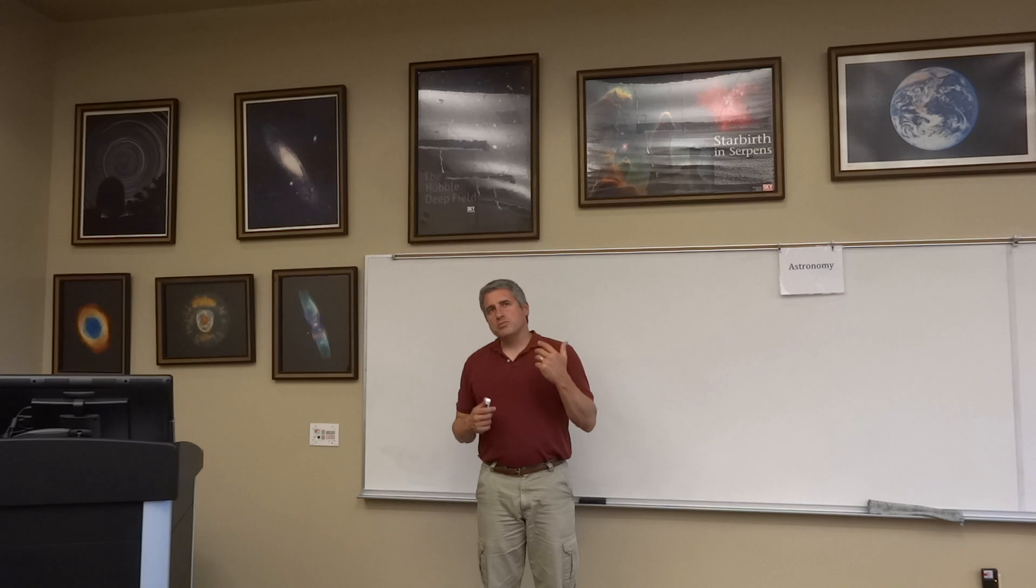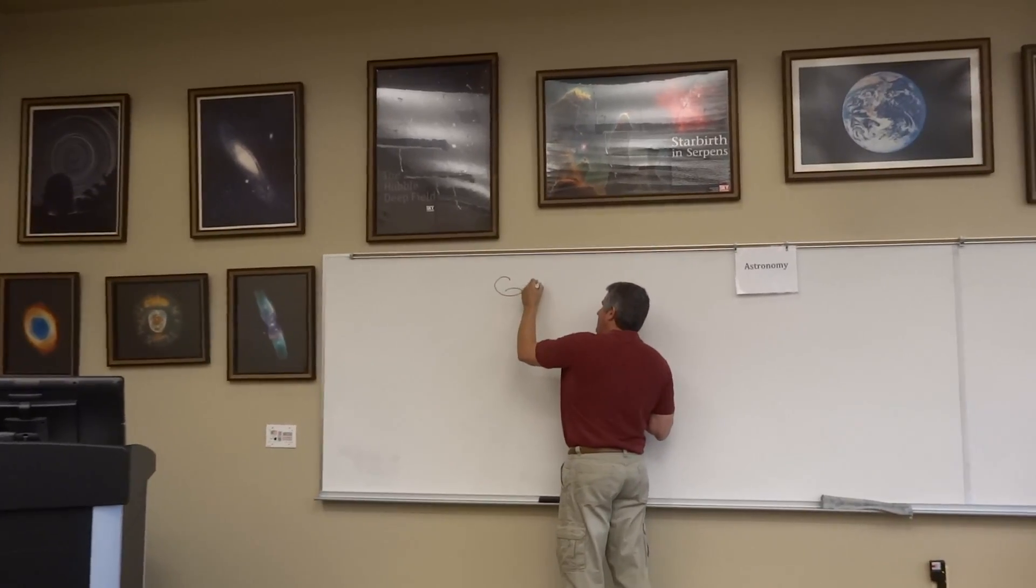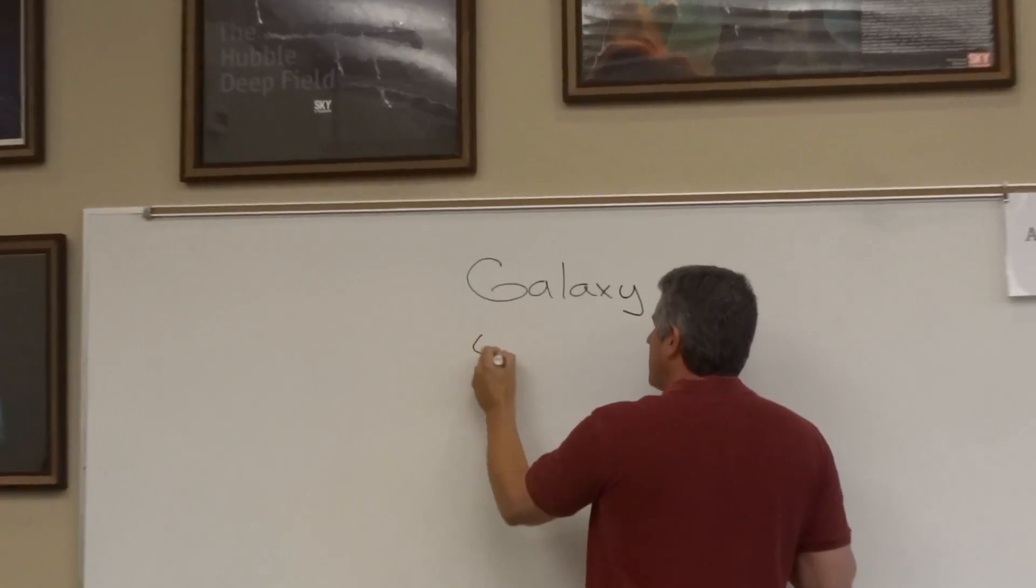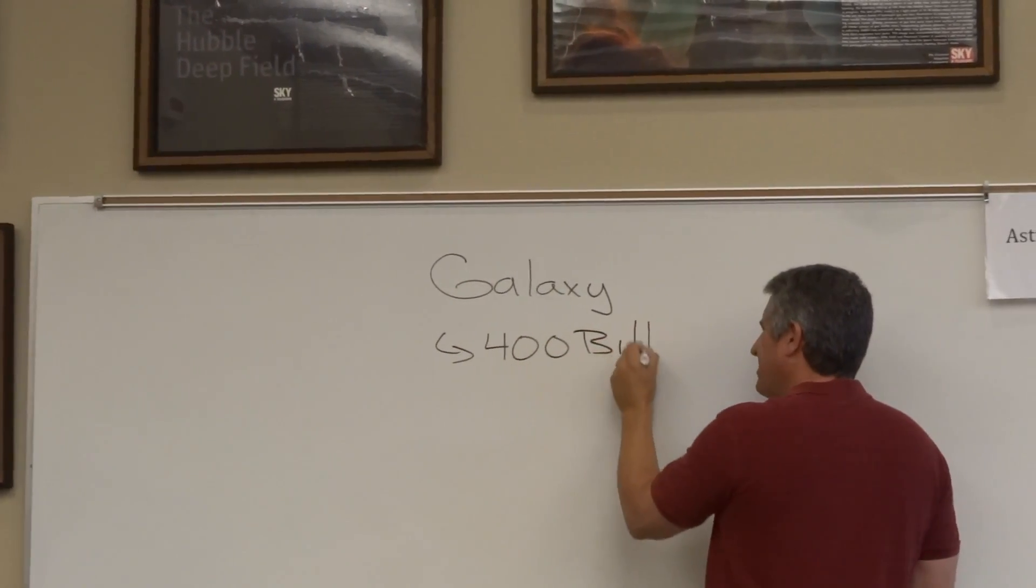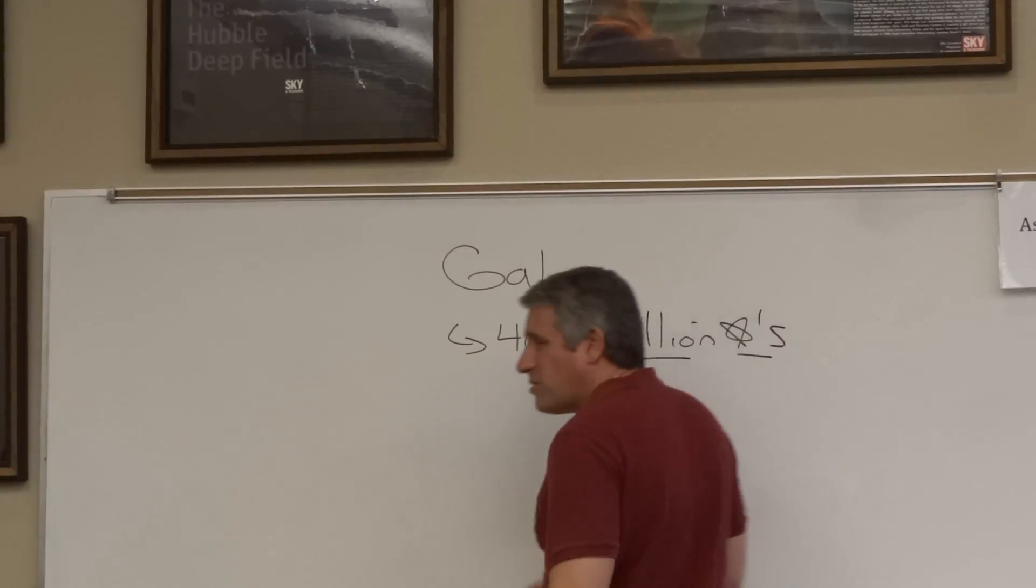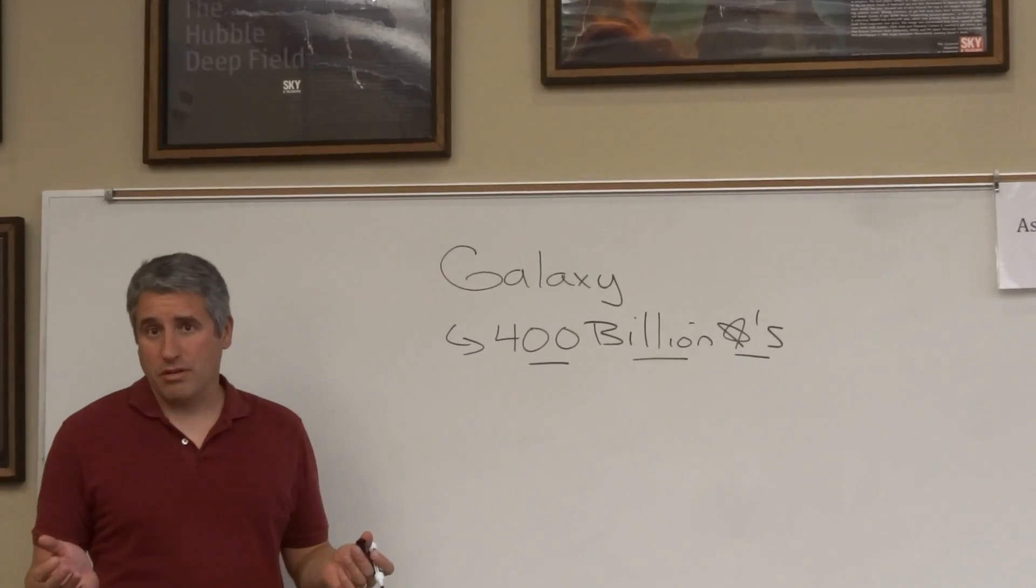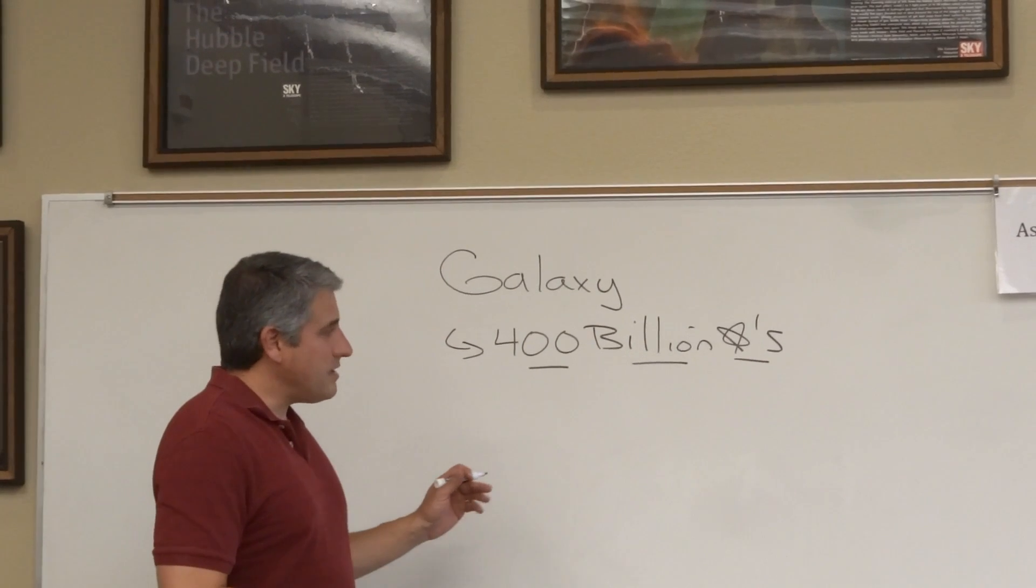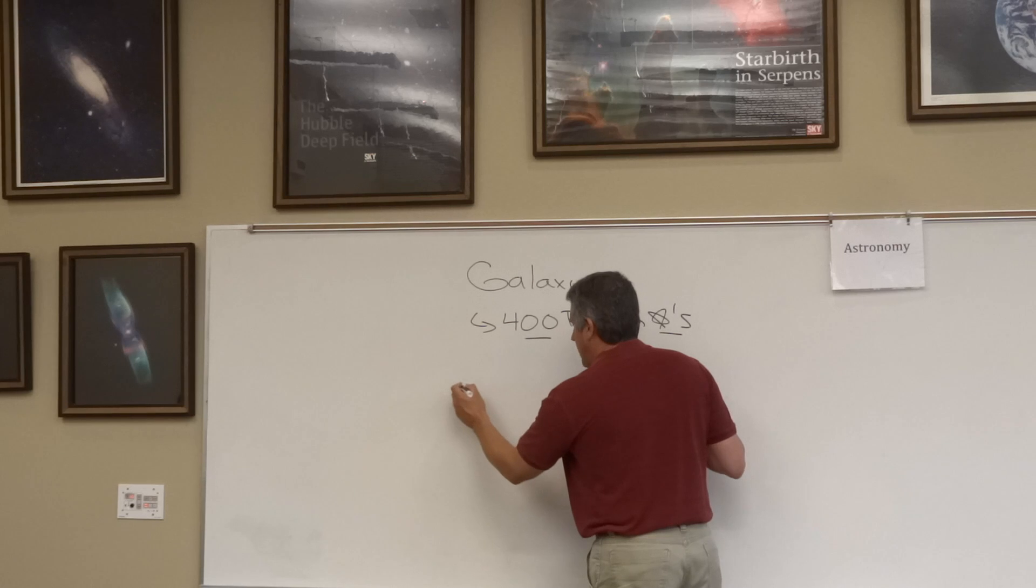Galaxies are, for the most part, moving away from us. What is a galaxy? We live in the Milky Way. The Milky Way galaxy is made up of a whopping 400 billion stars. There are more stars in the Milky Way than there are people on Earth.